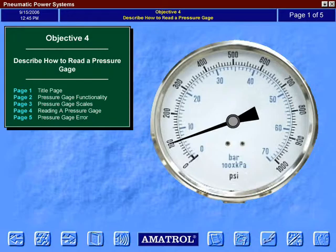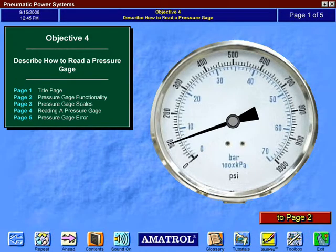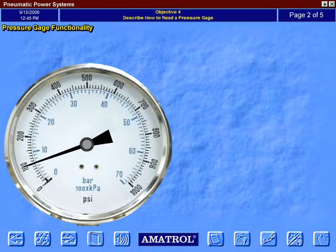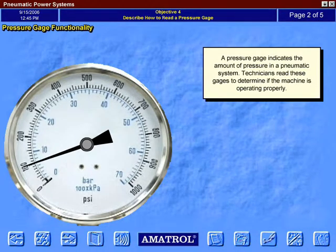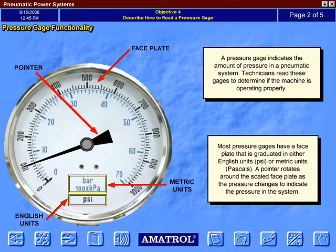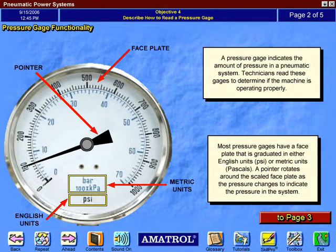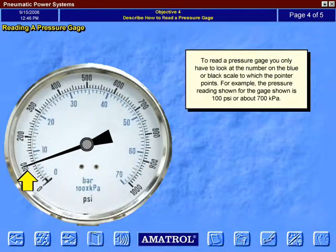In the objectives the characteristics and operation of industrial machines and processes are explained so that the learner can learn a concept or how to perform a task. For example, here the learner is presented with the components on a dual scale pressure gauge and learns how to read the pressure gauge.